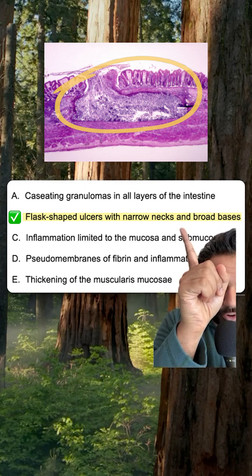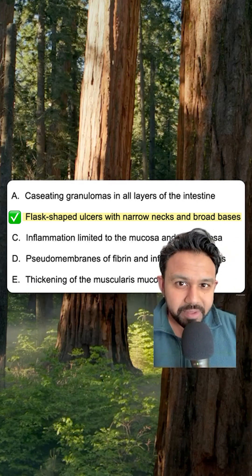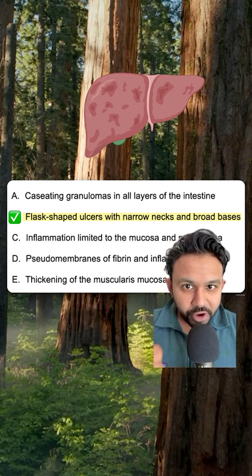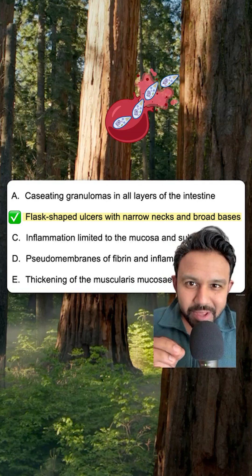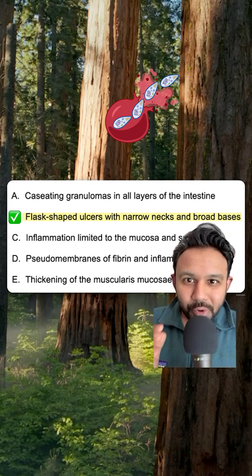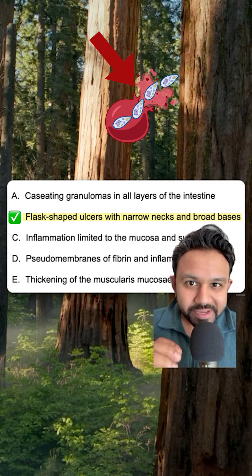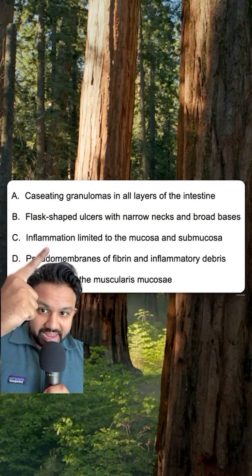Answer choice B: flask-shaped ulcers with narrow necks and broad bases. This refers to Entamoeba histolytica. Watch for liver abscesses — Entamoeba eats erythrocytes, i.e. there will be RBC inclusions within the protozoa.